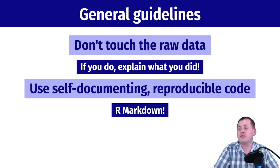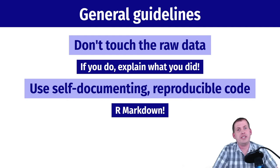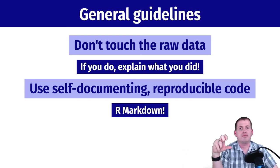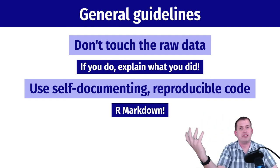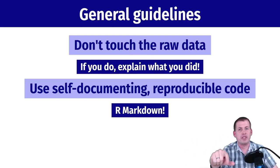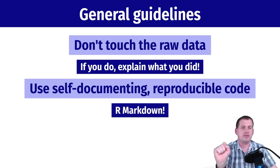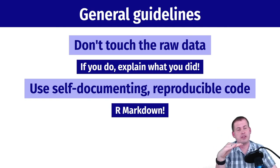Another guideline is to use self-documenting, reproducible code — this is why you're using R Markdown. When you have an R Markdown document, it has all the text explaining what you're doing along with the code embedded directly in the document. Anybody can look through that document and understand what was going on. If you accidentally missed five countries, that would be way more apparent in the code than in some hidden Excel cell. Anyone can look at your R Markdown file, follow the code, and know what's going on — and it's open to the public, which is good for reproducibility.